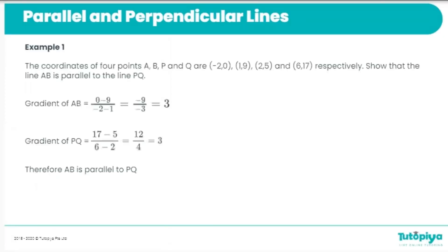Let's look at an example showing how we deal with these parallel and perpendicular line facts in questions. The coordinates of four points A, B, P, and Q are negative 2, 0; 1, 9; 2, 5; and 6, 17 respectively. We are asked to show that line AB is parallel to line PQ.